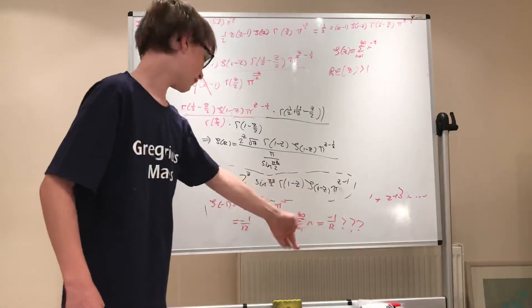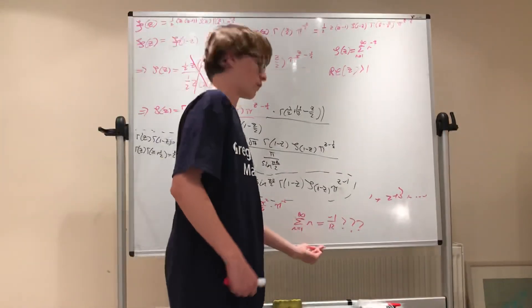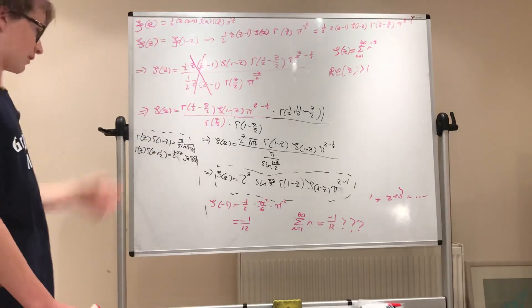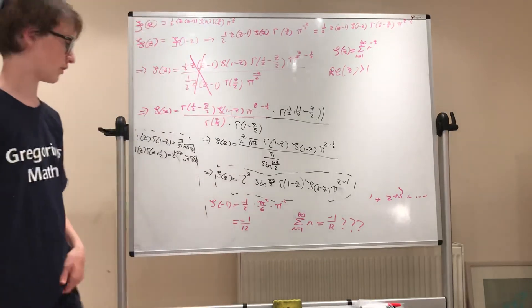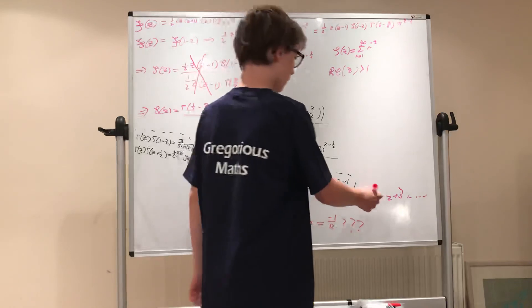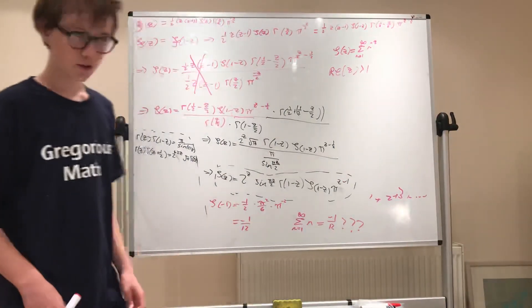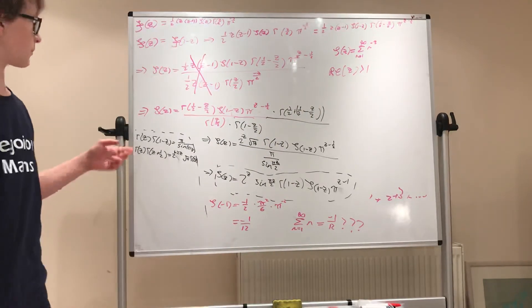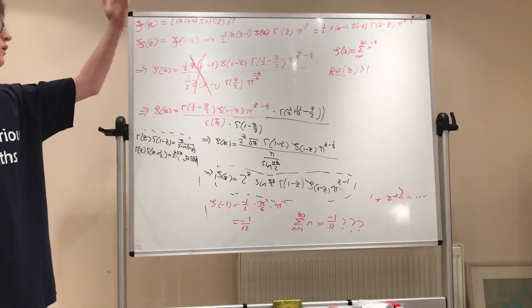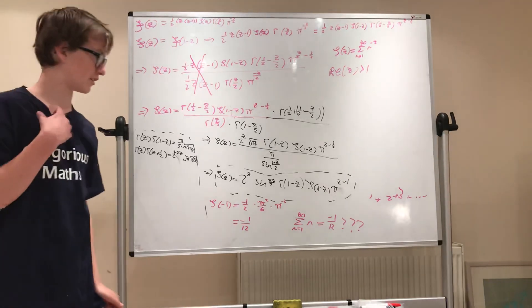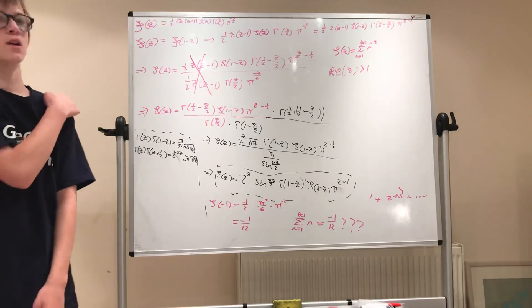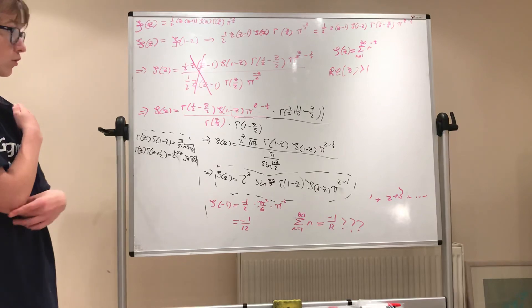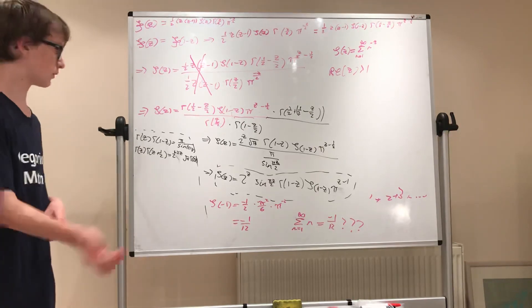When you analytically continue the zeta function you get zeta of negative one equals negative one over twelve, and if you recall the original definition this would mean that formula holds — but it's a bit weird. This only works because we analytically continued the zeta function; it does not mean that when someone asks you to add 1 plus 2 plus 3 you should say negative one twelfth. I'll see you in the next video where I'll probably prove the functional equation for the xi function, and then continue with K-theory, group theory, or maybe a hairy ball theorem proof.